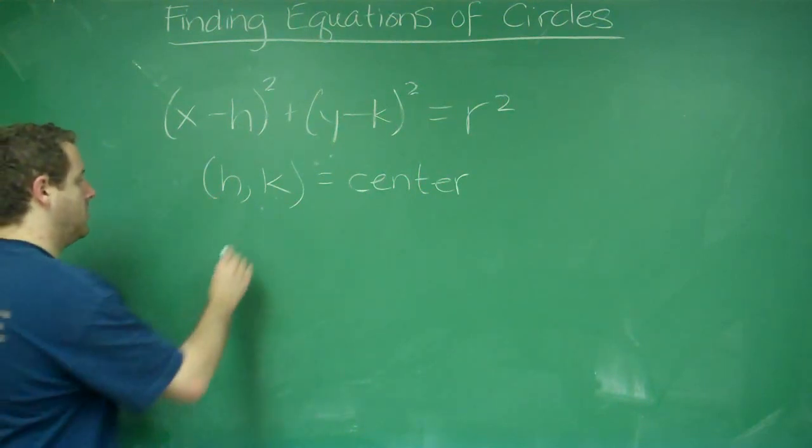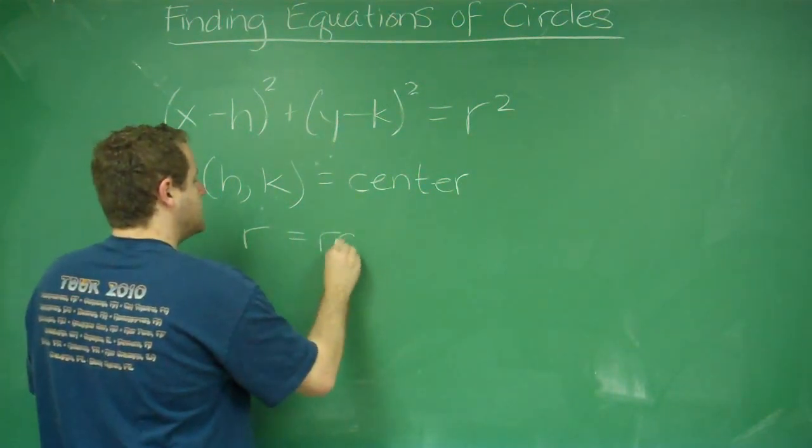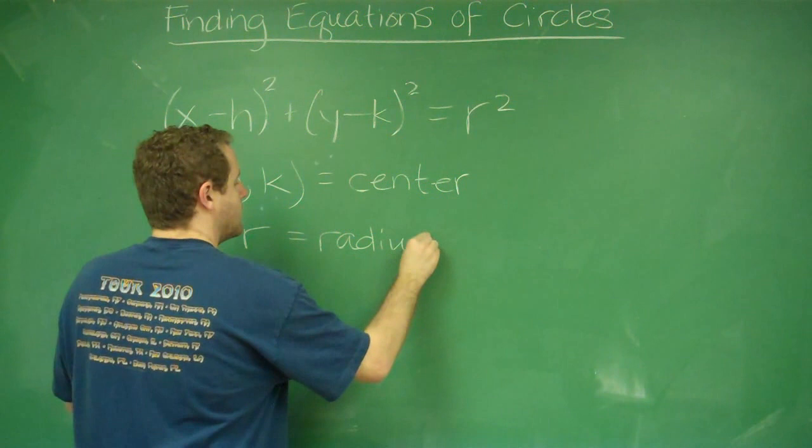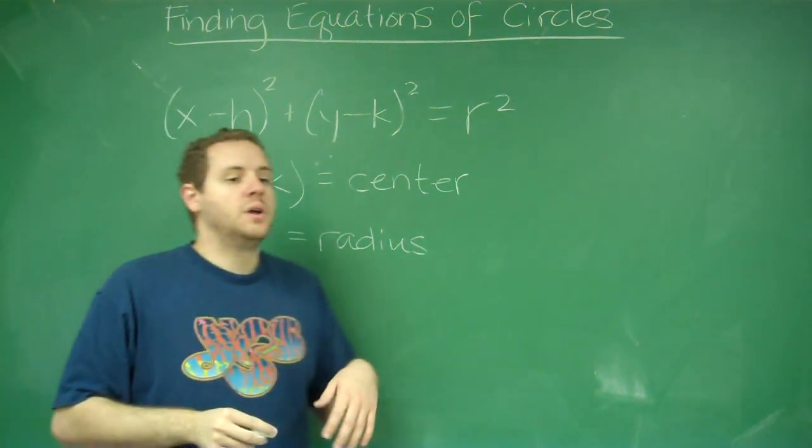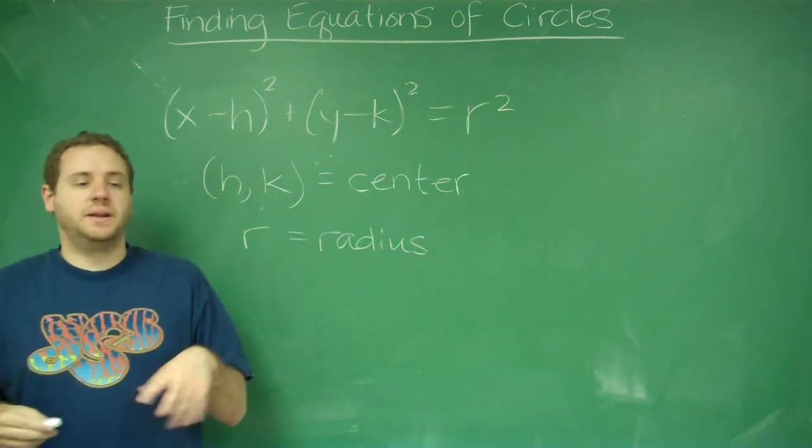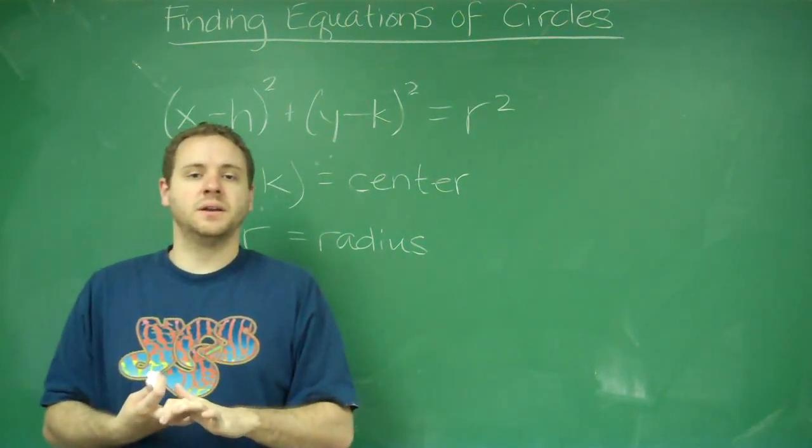And lastly, we have r. r is, of course, the radius of the circle. So, if you're given the center and the radius, you can write the equation of the circle very easily.